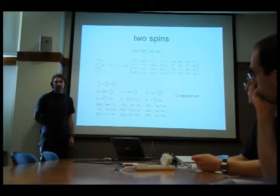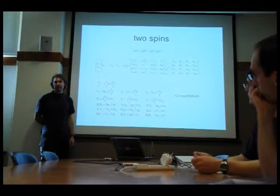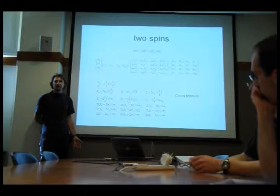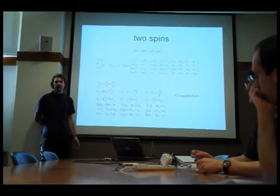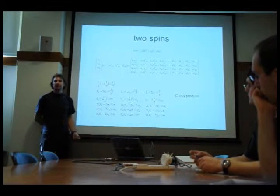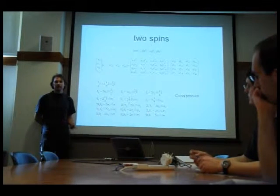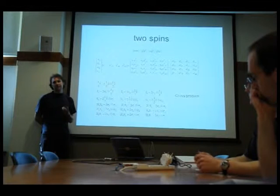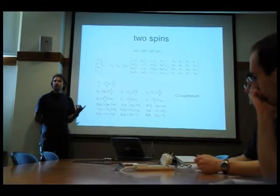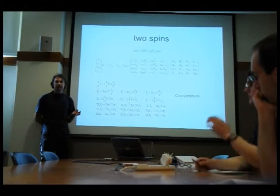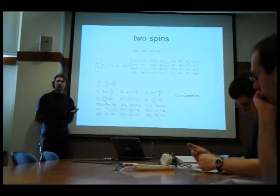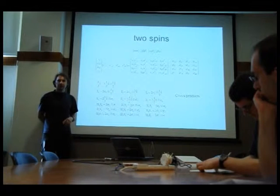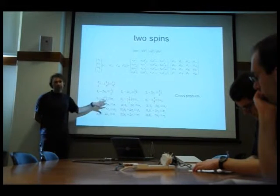They don't necessarily have to be coupled, but it's really only a useful description when they're coupled, because otherwise it's kind of boring. If they're not coupled together, then it would be enough to just describe one spin one half, and it would behave identically. But if they're coupled, then it'll become more interesting, because there's other sorts of solutions that we will talk about in a moment.